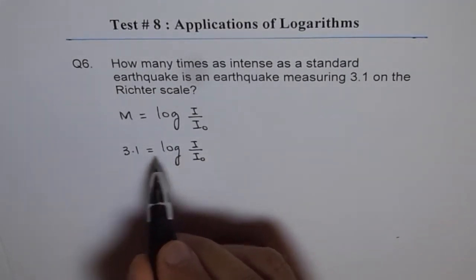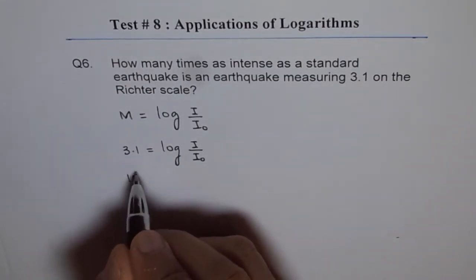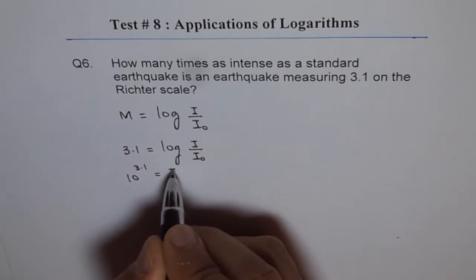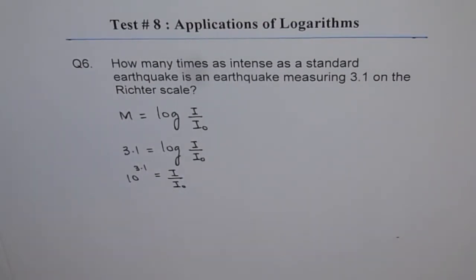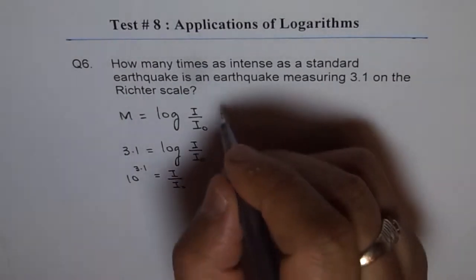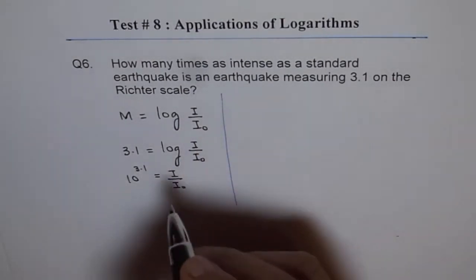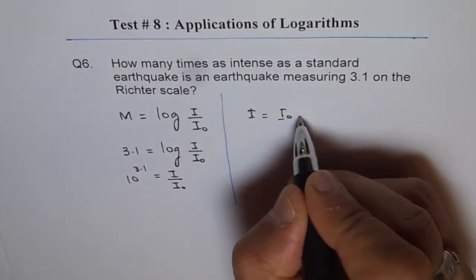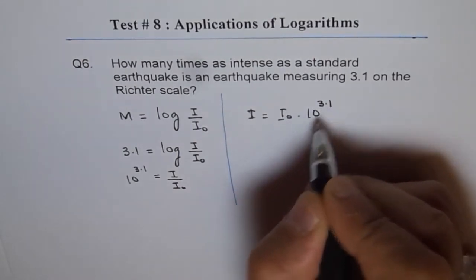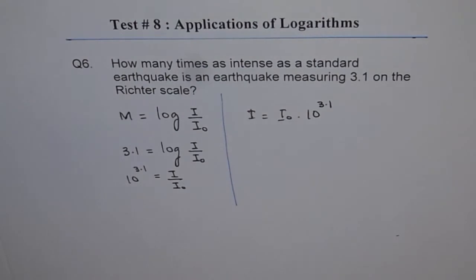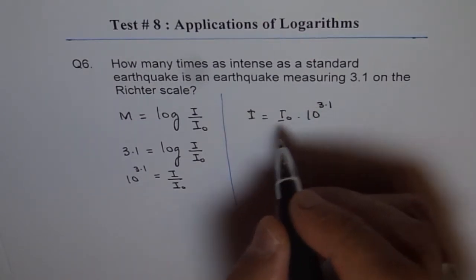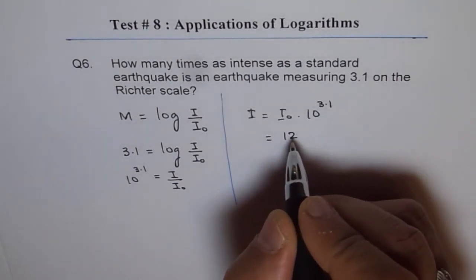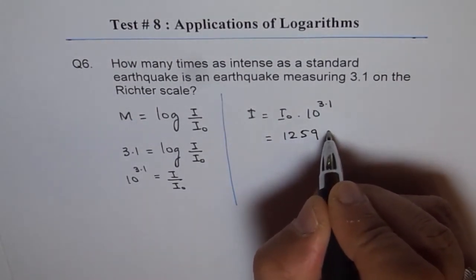Since this is base 10, we write it in exponential form: 10^3.1 = I / I₀. Therefore, I = I₀ × 10^3.1. Evaluating 10^3.1 gives approximately 1258.92, so the earthquake is approximately 1259 times as intense as the standard earthquake I₀.